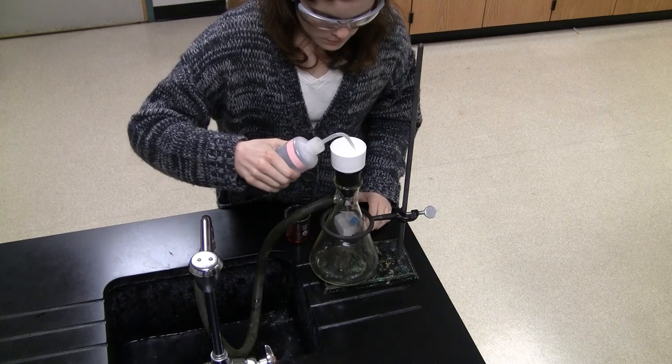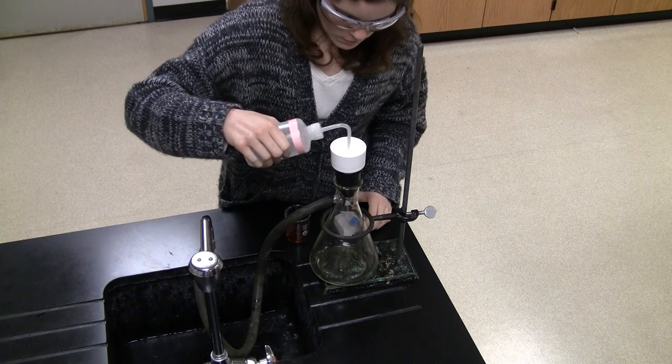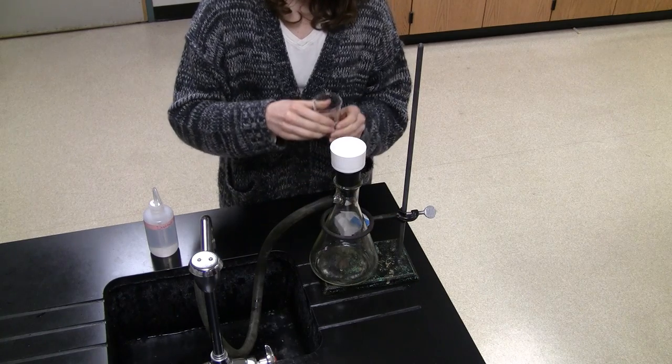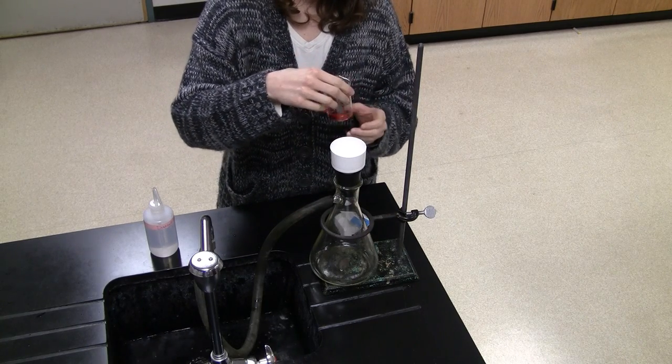While pulling suction from the sink, wet the filter paper with distilled water. This allows the paper to make a better seal to the Buchner funnel, so no solid can flow around or under it.